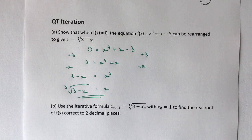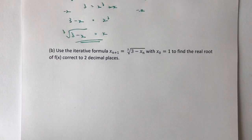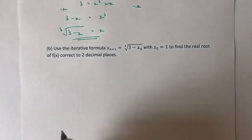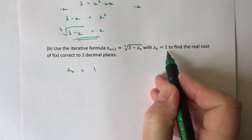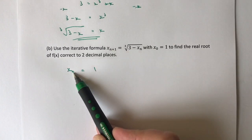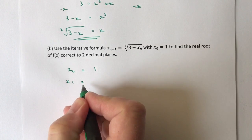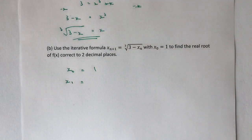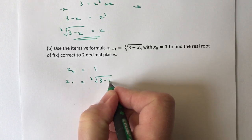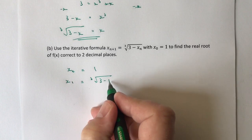Then it says use the iterative formula with x₀ equals one to find the real root of f(x). It's lots and lots of words, but basically all they mean is start with x₀ equals one, and then take that information and plug it directly into the formula. Because x_(n+1) is zero plus one, the next iteration is to take this value of one and plug it in: the cube root of three minus one, which is the cube root of two.